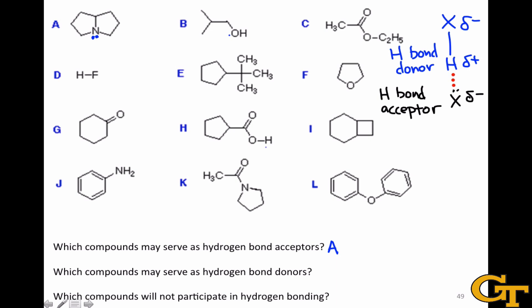Molecule B has an oxygen which bears lone pairs, and so it, like A, can act as a hydrogen bond acceptor. It also includes an O-H bond, and so it can act as a hydrogen bond donor as well.